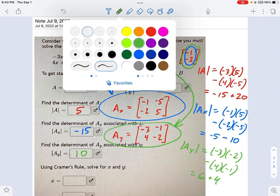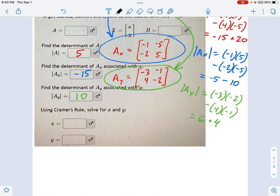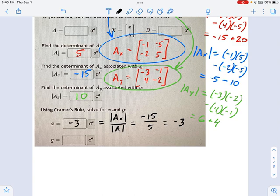We have all these determinants, and here's where Cramer's rule comes in very handy. To solve for X, here's the equation: the determinant of AX divided by the determinant of A, which is just going to be negative 15 divided by 5, so that's negative 3. And that's our solution for X.